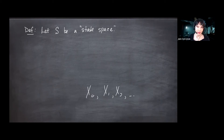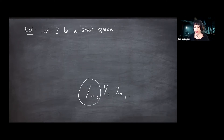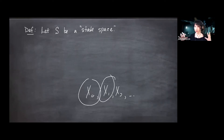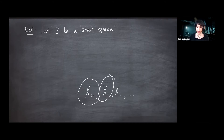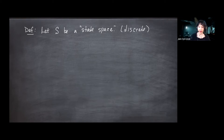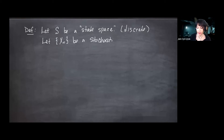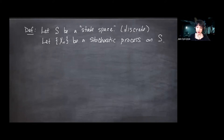The assumption is that all random variables in the sequence live on the same state space. It's not impossible to have them on different spaces, but you can always just take the union and assign probability zero to irrelevant entries. So we let X_N be a stochastic process — a sequence of random variables on discrete state space S. Now we're ready for the formal definition.